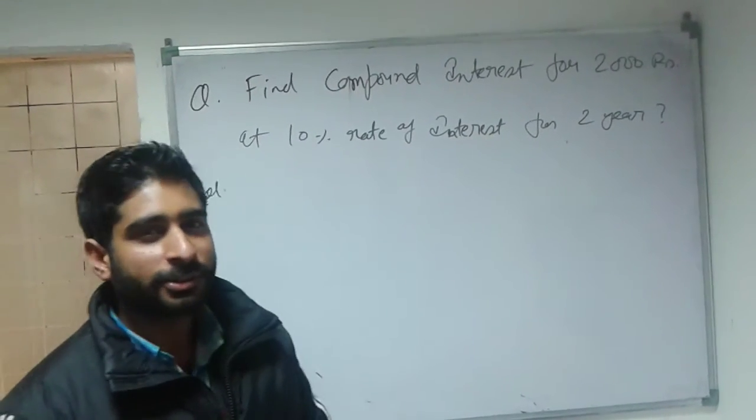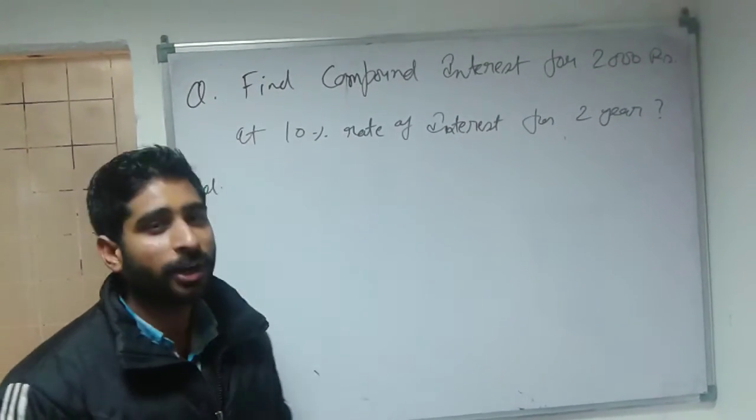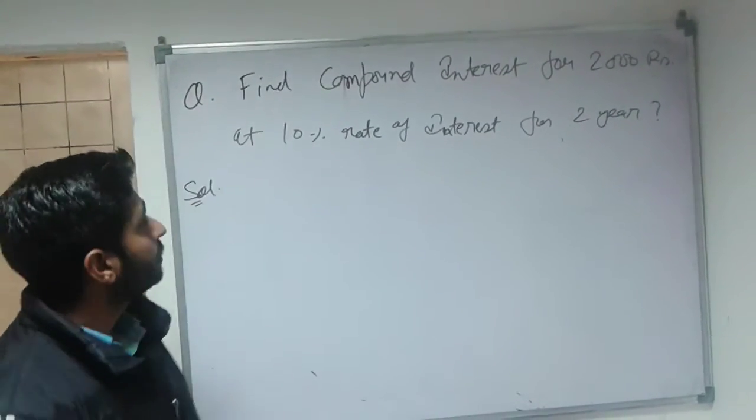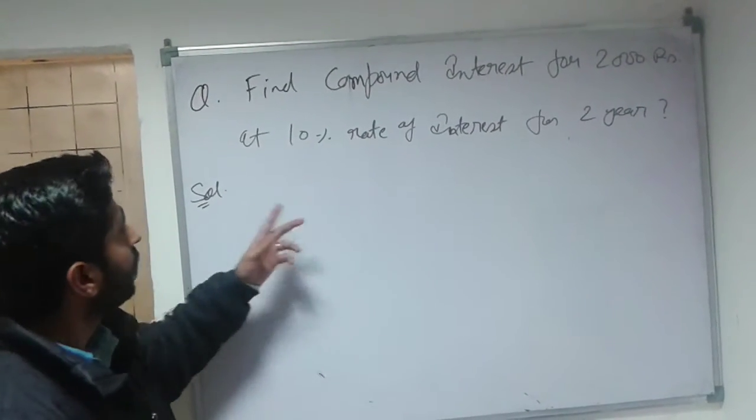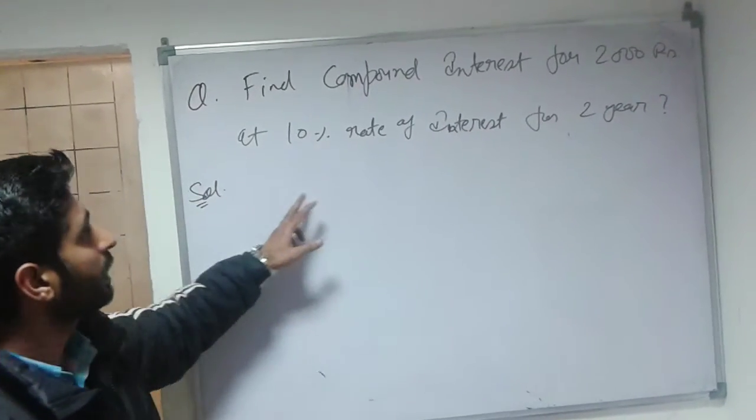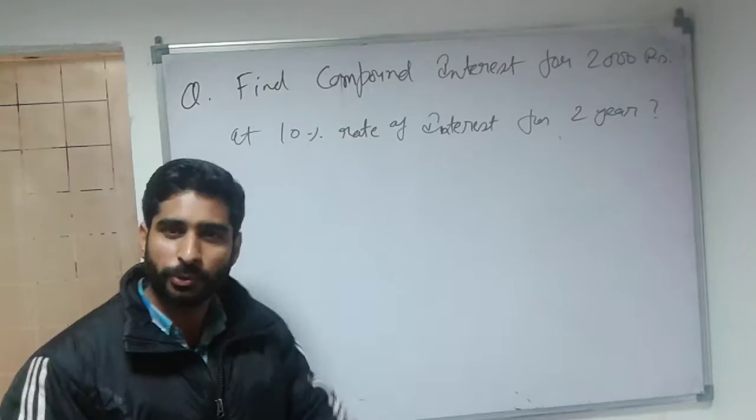Hello friends, this is Sunil Soni and today we will learn how to find compound interest quickly. As you can see, there is a question: find the compound interest for 2000 rupees at 10% rate of interest for 2 years.